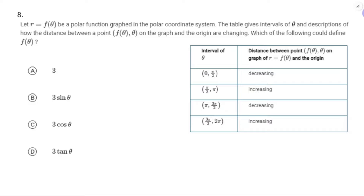Here we have a table telling us about an interval of theta and the behavior of the graph of the function on that interval. We need to figure out which of these polar curves matches. r = 3: that's a circle centered at the origin, with a constant distance from the origin everywhere. So if theta increases, the distance is not going to be changing at all — it's neither increasing nor decreasing. I'm going to get rid of that one.